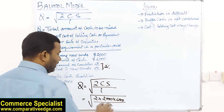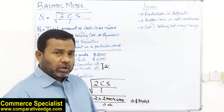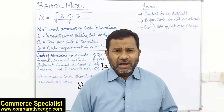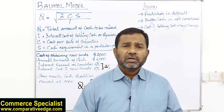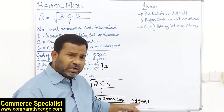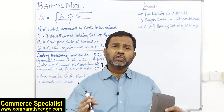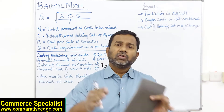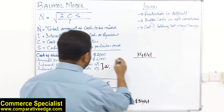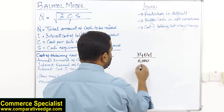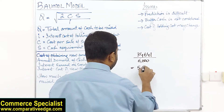Doing this calculation, the answer comes to 34,641. This means at any given point in time, when converting securities into cash, the most appropriate amount to convert is 34,641 dollars. If we then divide 34,641 by the annual cash requirement of 6,000, we get 5.77 years.